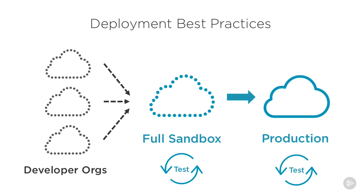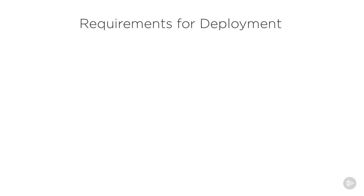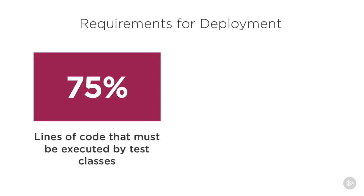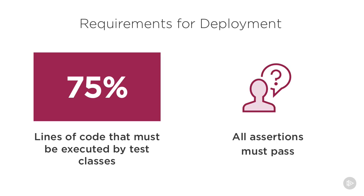As you can see, deployments can be a big deal, especially in larger Salesforce orgs. Hopefully, this also reinforces how important test classes are to you. The requirements for test classes and deployments are the same, as the two are so closely tied to each other. Just as we learned during the test class module, we need 75% code coverage with all of our assertions passing. If we don't have any assertions, then 75% code coverage is sufficient. Remember, this means 75% of all code in your org needs to be covered by test classes, not just the specific code that you're deploying.